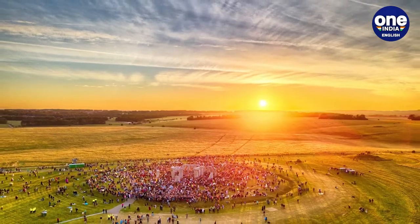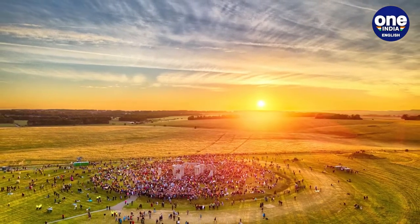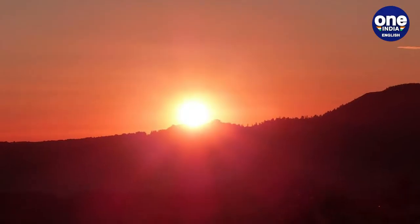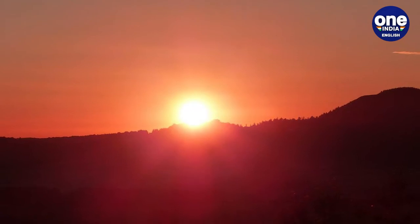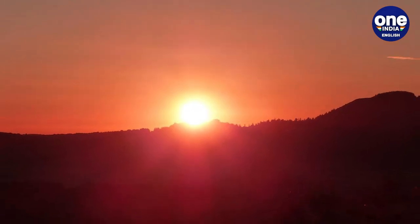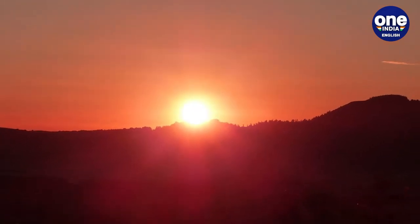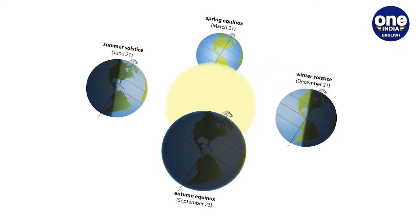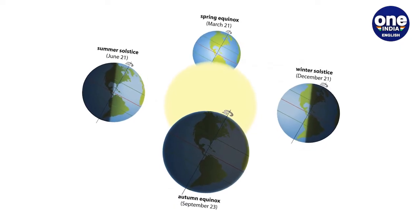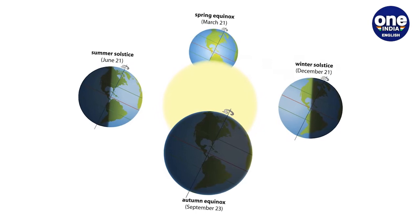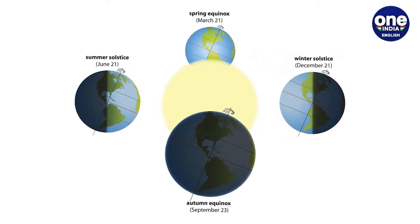For instance, in the US the coldest temperatures are seen after mid-January, about a month after the winter solstice. It is hottest in the US in the months of July and August, weeks after the summer solstice.